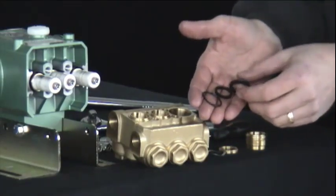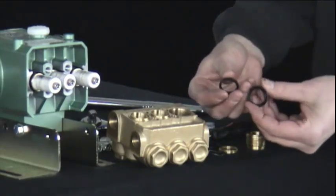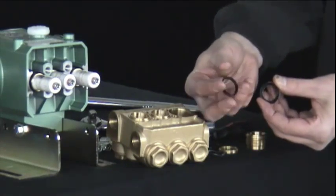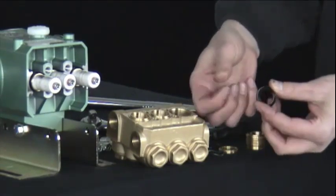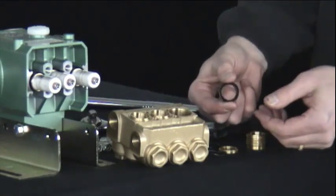You'll notice the low pressure seal and high pressure seal are similar. Main difference between the two is that the low pressure seal here in my right hand is much softer and more flexible than the high pressure seal, which is firm.